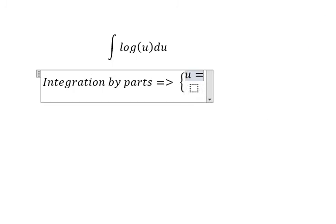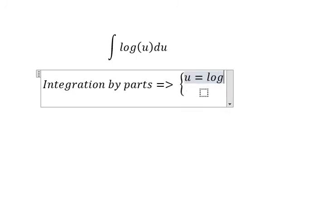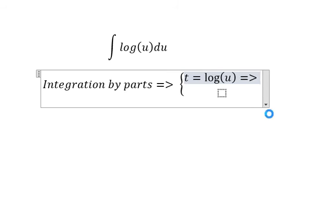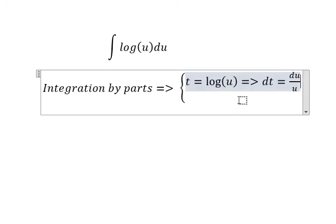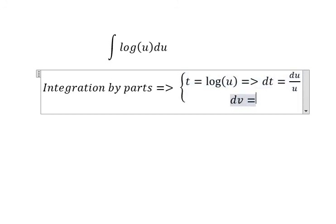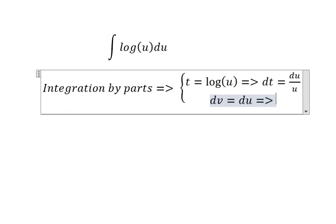u is the logarithm of u, so we change to t. This one we have dt equals du over u. dv we change to du, and we got v equals u.